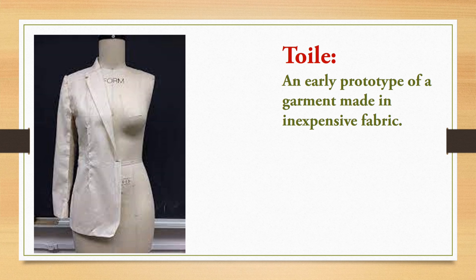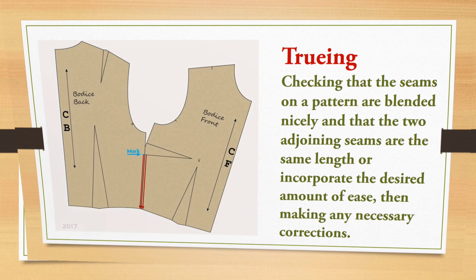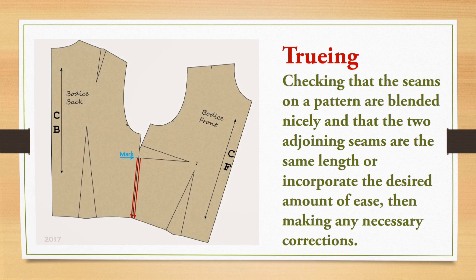The next term is toile. Toile is a prototype of a garment made from an inexpensive fabric. We have used this alongside the term muslin — muslin is the fabric, and the garment made of muslin is called the toile.